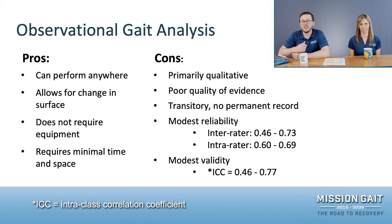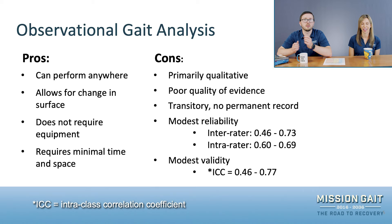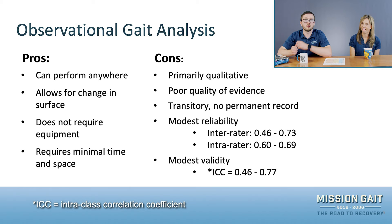Unfortunately, there are also a lot of cons. First, it's primarily a qualitative measure — we don't get a score from this. We don't say, 'oh, we got a score of 40 on their gait.' That doesn't make sense, and the research hasn't found a way to make that happen. The current evidence for observational gait analysis is unfortunately quite poor. The other thing is it's also transitory — there's no permanent record other than what you happened to write down at a given point in time. A patient may present with an impairment, but if you didn't write it down, there's no record to reference later.